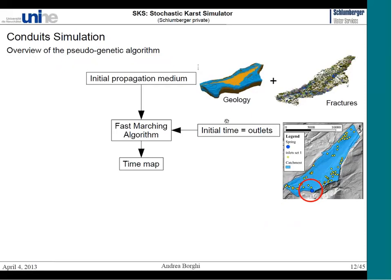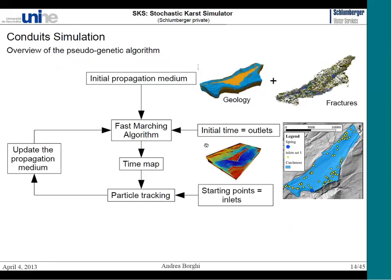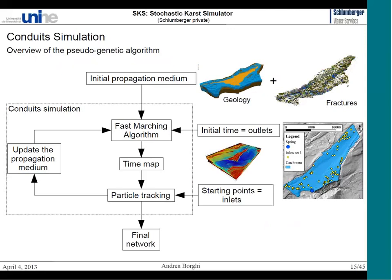We use the inlets of the system, mapped here as yellow dots, and iteratively perform particle tracking, update the propagation medium, recompute the time map, and so on, until we simulate the final network. This loop is the main conduit simulation loop explained earlier.